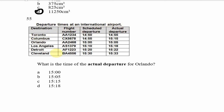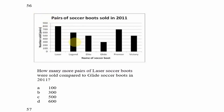Looking at question 55 — this table shows departure times at an international airport. We need the actual departure time for Orlando. Looking at the 'actual departure' column and aligning with the Orlando row, the time is 1505, which is option B.